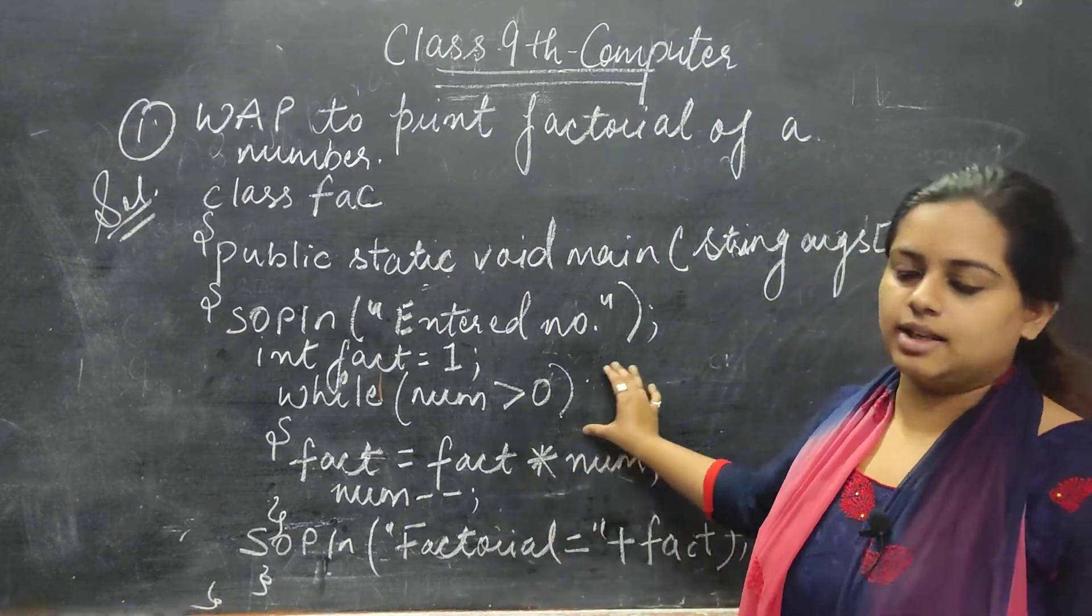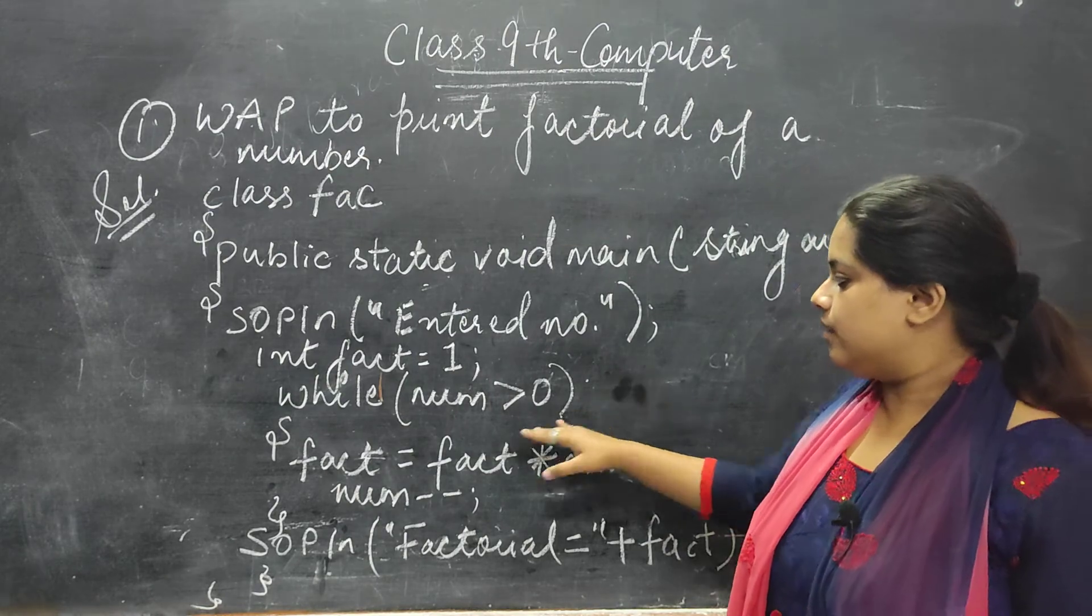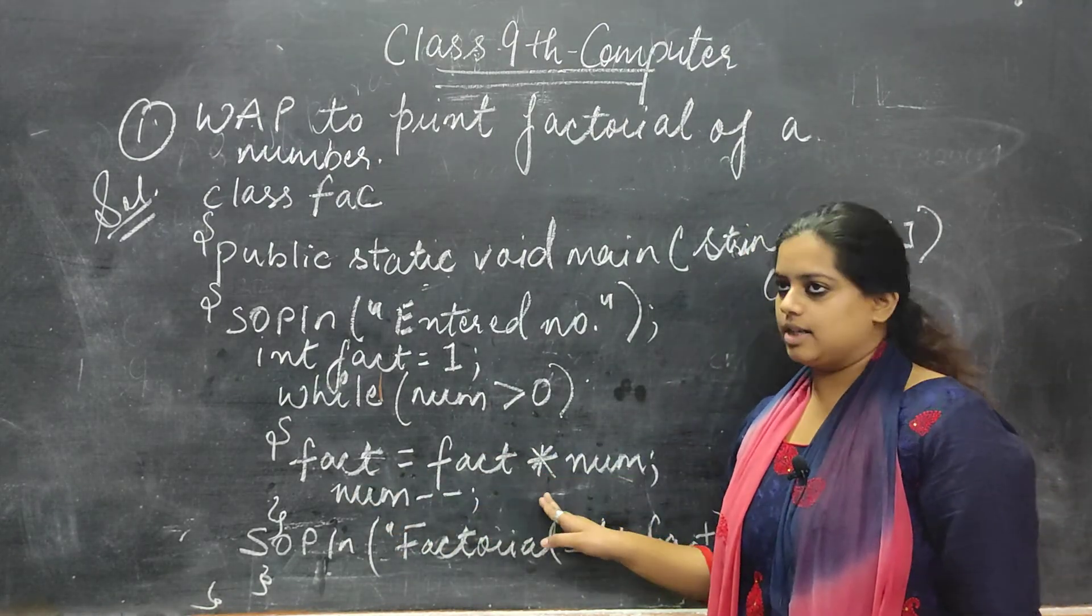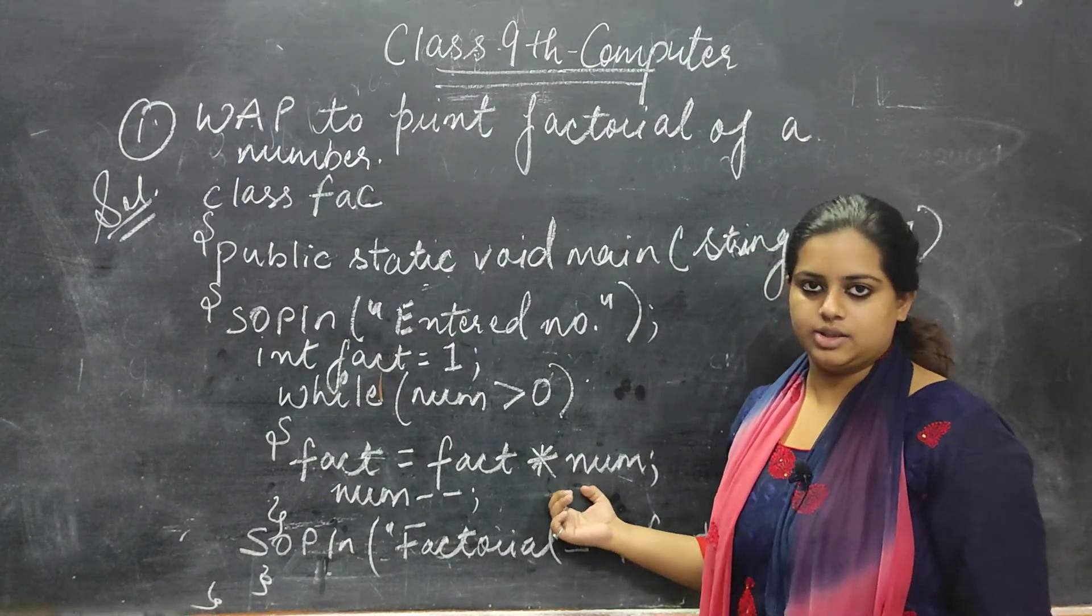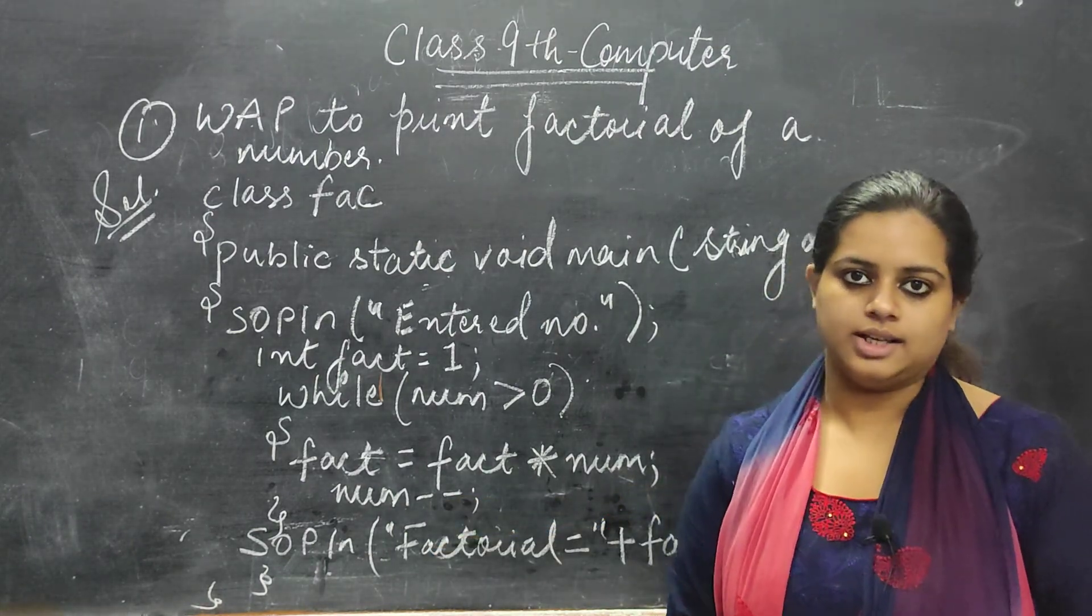Over here children, basically you have to focus on the condition. Condition which I have given is FACT is equal to FACT into NUM. That is your number and once you get the answer over here, you have to decrease its value by 1. So thank you class.